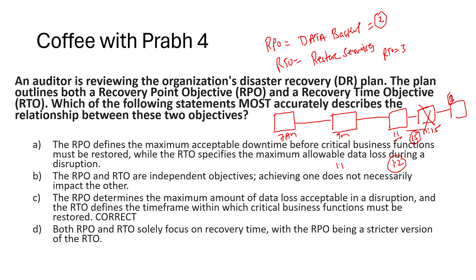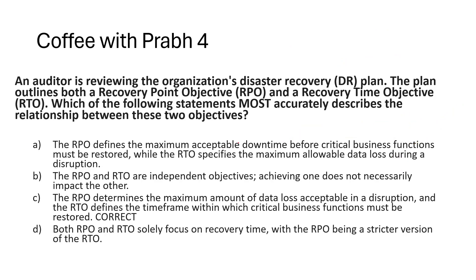If you want to reduce the RPO, you need to invest more in backup costs by increasing backup frequency. Option A says RTO defines maximum acceptable downtime while RPO specifies maximum allowed data loss — the second part is reversed, so A is eliminated. Option B says RPO and RTO are independent — that's not true, because achieving a shorter RPO requires more frequent backups and the restoration of that data also takes time. So B is eliminated.